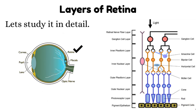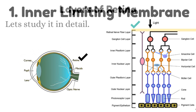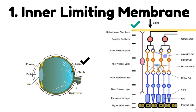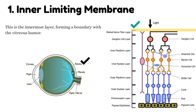Number 1: Inner limiting membrane. This is the innermost layer, forming a boundary with the vitreous humor.